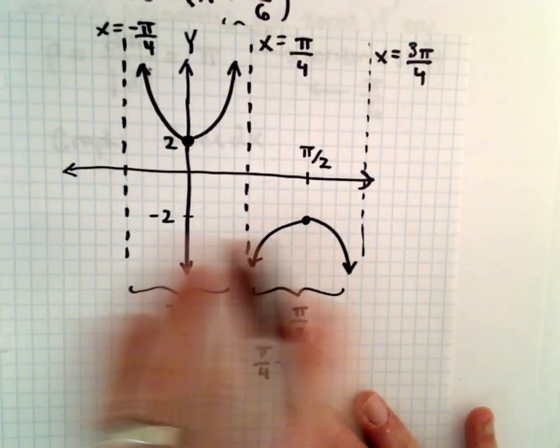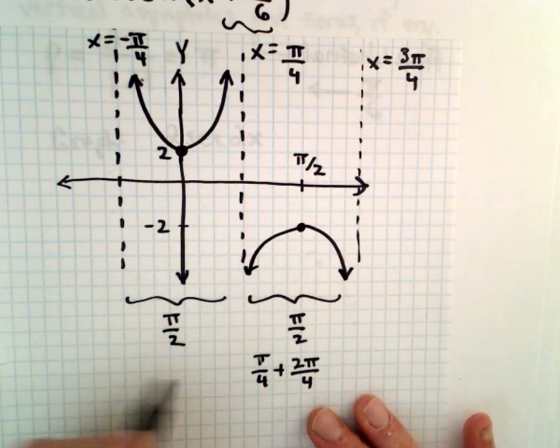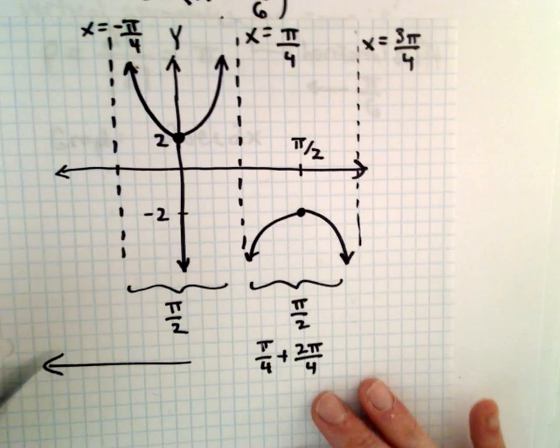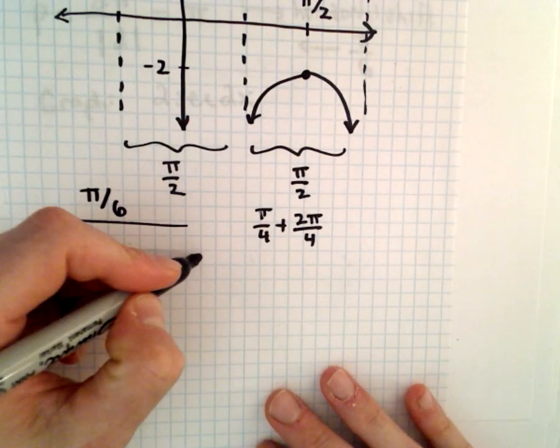So, all I'm going to do to get the new graph is just take this, and again, I'm just going to shift everything to the left by pi over 6 units. So, let's see if we can't do that here.